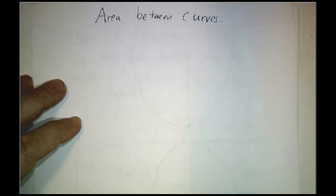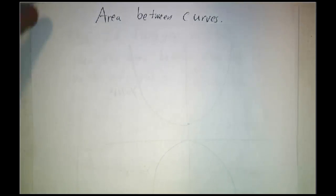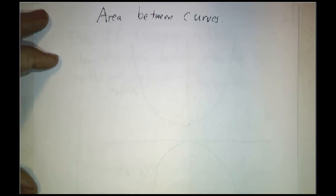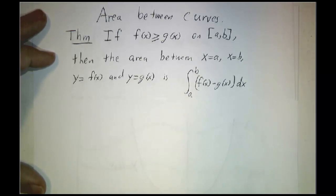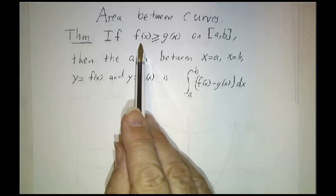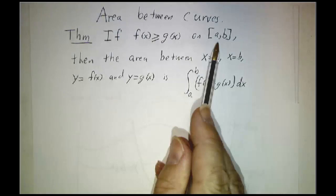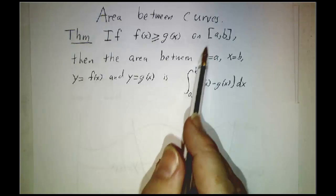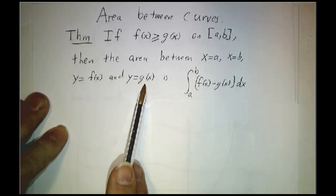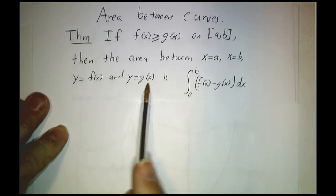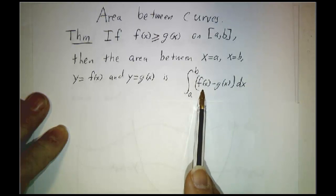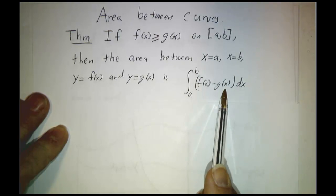Last time we figured out the area between two parabolas. Now let's see if we can generalize what we did to the area between any two curves. Here's the procedure: if you've got two curves, a higher curve and a lower curve — we assume that f is bigger or equal to g on the interval — then the area between y equals f and y equals g between a and b is the integral from a to b of the higher curve function minus the lower function dx.